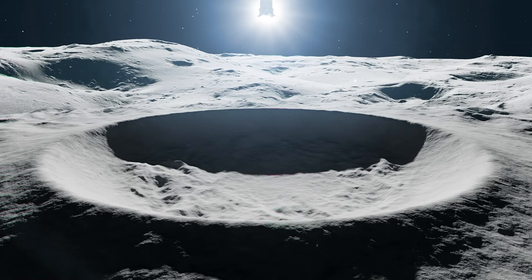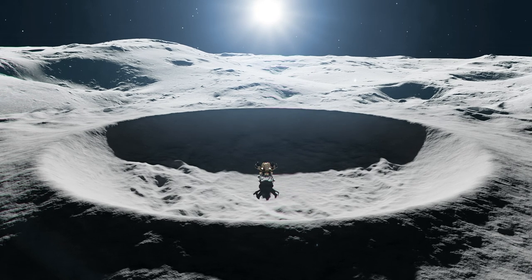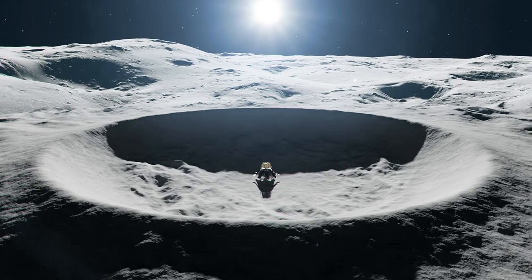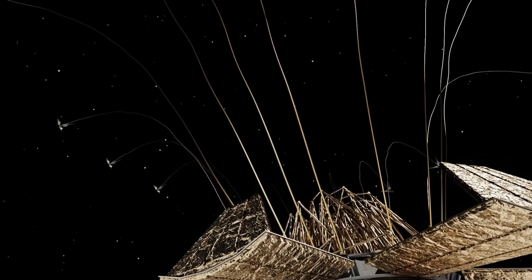We now discuss the concept of operations. This concept art made by artist Vladimir Vustansky is not to scale. First, a lunar lander lands in the selected crater. The lander fires the anchors to the crater rim.